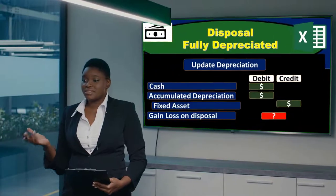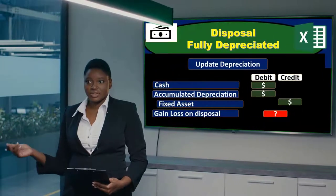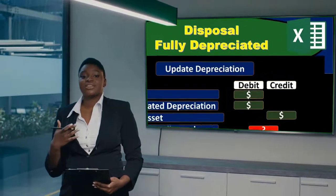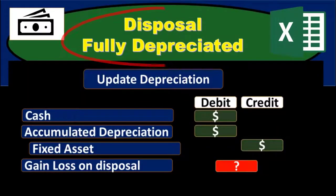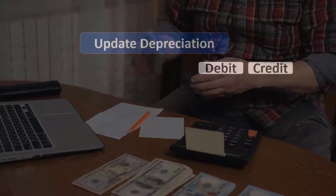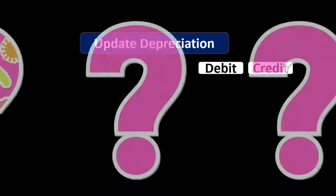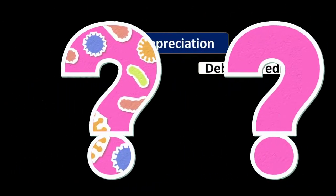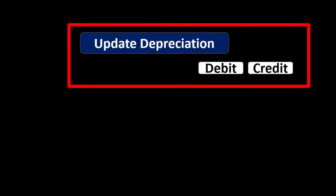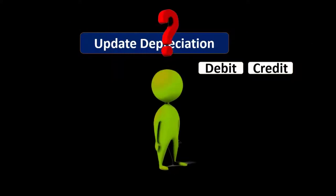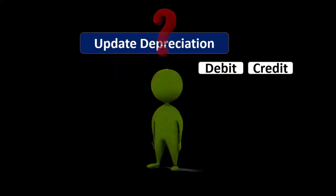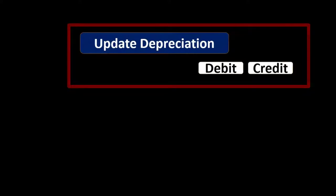In this presentation we will take a look at the disposal process for property, plant, and equipment for fully depreciated fixed assets. Whenever considering the disposal process we want to go through a series of questions to make sure we get the process down. It is a bit more complicated of a transaction and journal entry, but not too bad. When thinking about the list of questions, I would think about it in terms of constructing the journal entry.